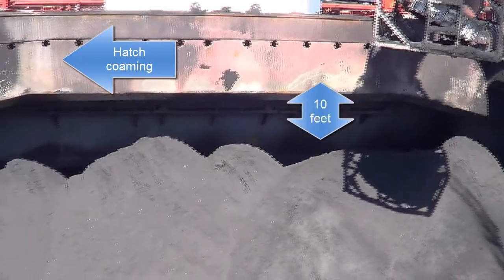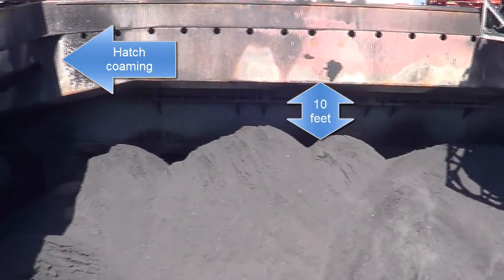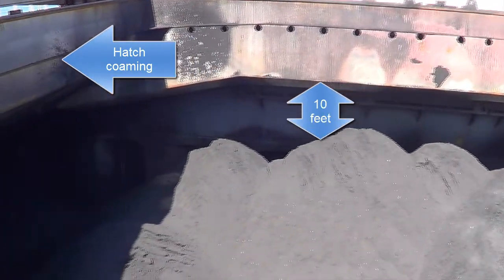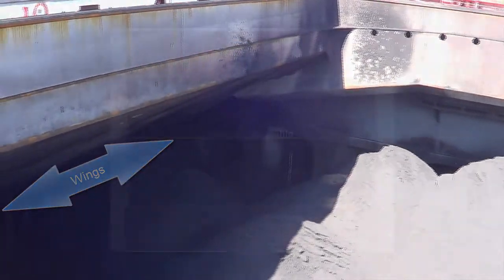Watch the peaks of each pile and keep at least 10 feet between the top of the pile and the hatch coaming. This is to allow for trimming of the hatch, throwing the coal under the coamings to fill in the wings.